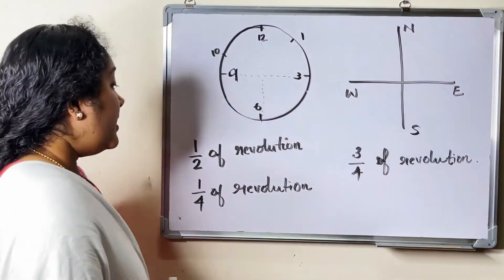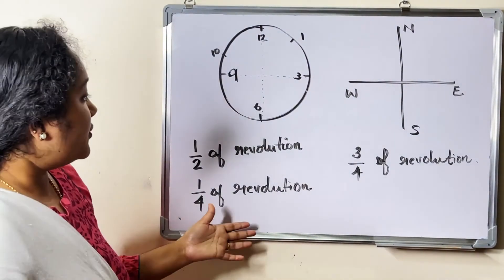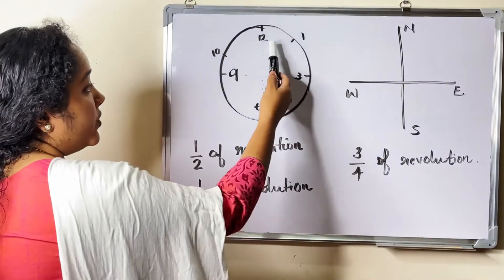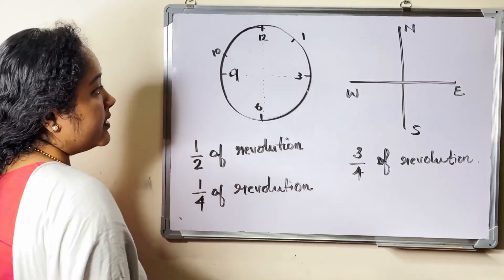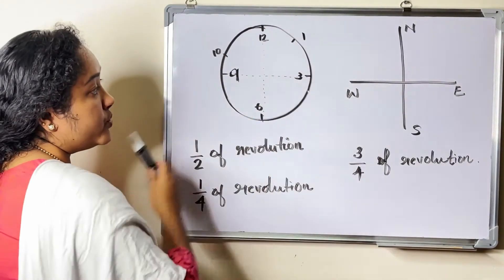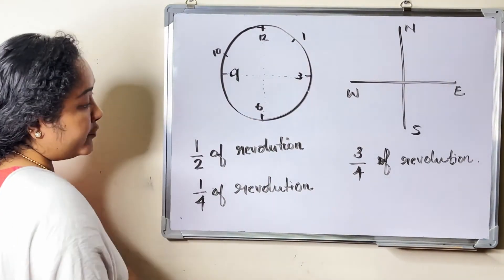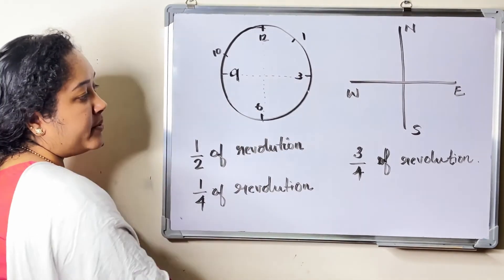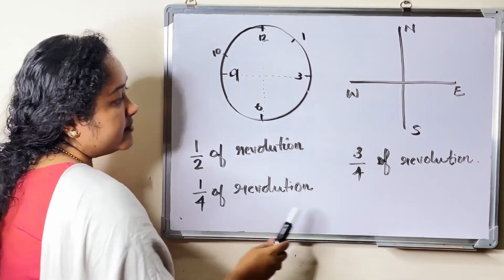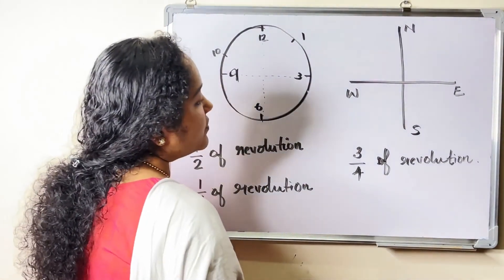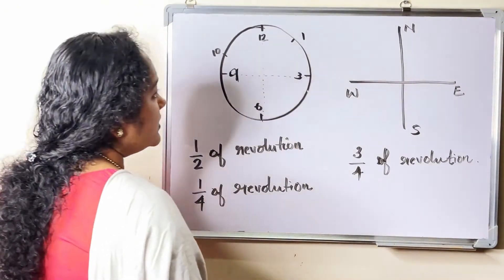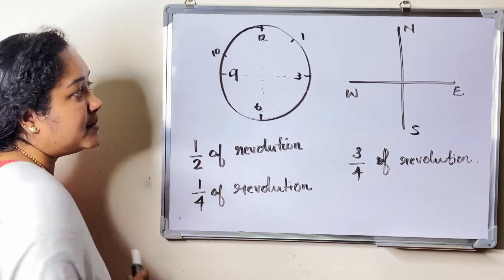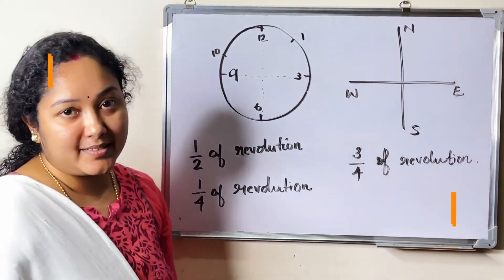In half of a revolution there is 1 straight angle or 2 right angles. One fourth of a revolution has 1 right angle. Three fourths of a revolution has 3 right angles.